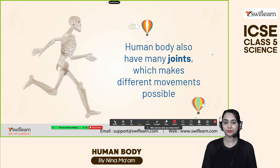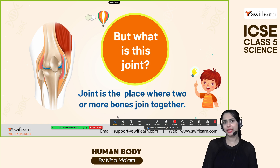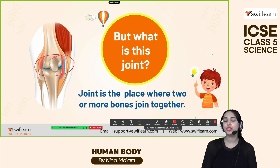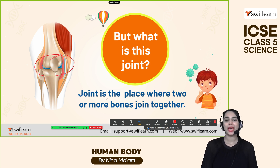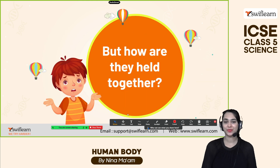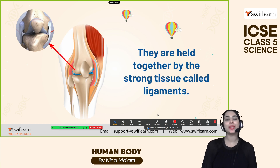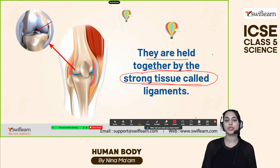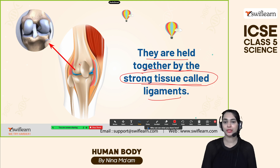What is a joint? A joint is the place where two or more bones join together. But how are they held together? They are held together by strong tissue known as ligaments. Ligaments are strong tissues which help bones hold together. You can see the ligaments there, which help form a strong connection.